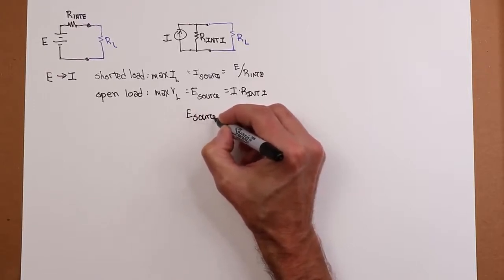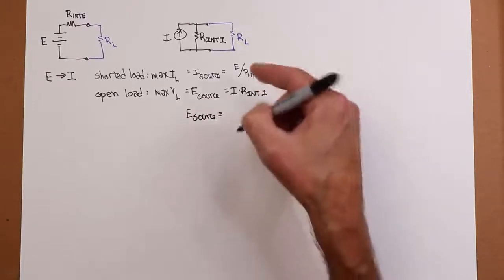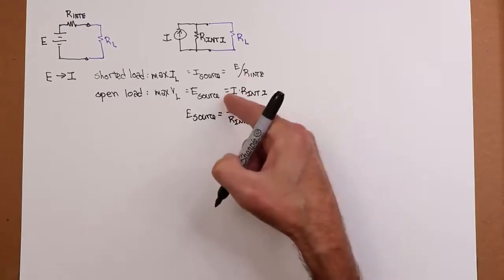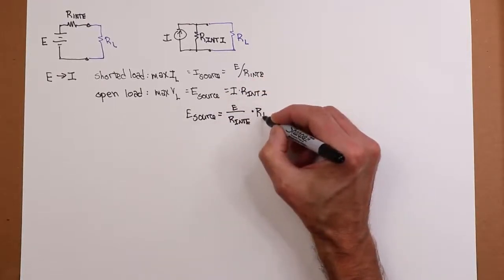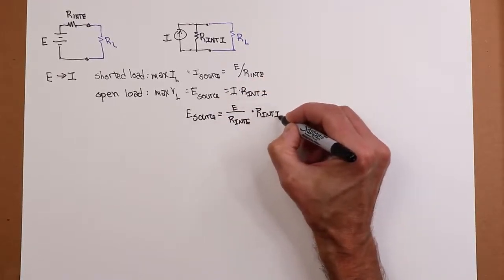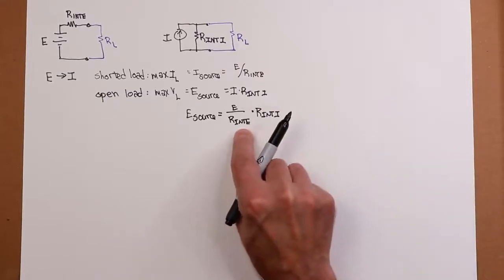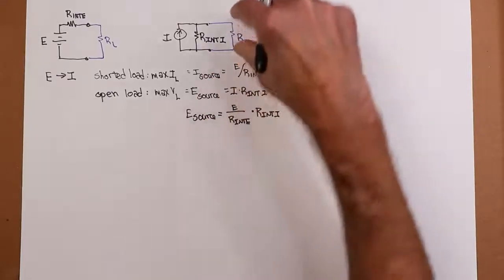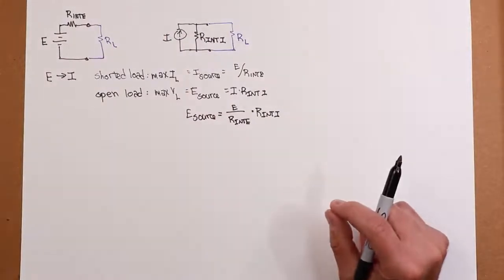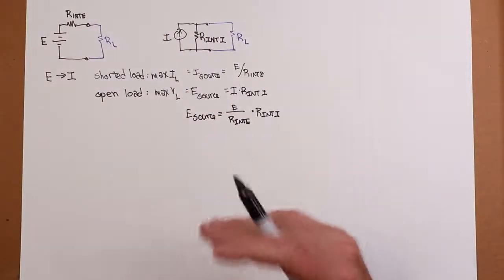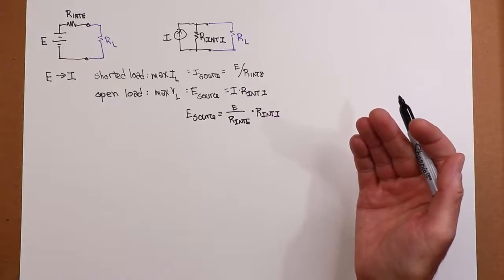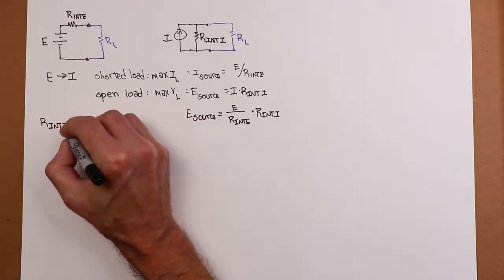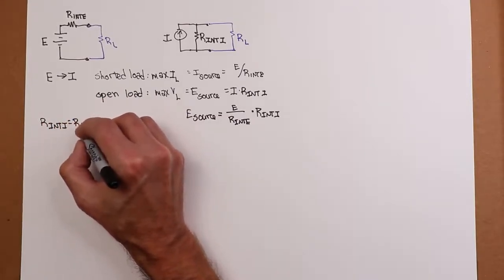Well, the only way that can occur is if the internal resistance for the voltage source and the current source are the same value. Then your load out here is the same as your source voltage. So now we have an idea. It turns out that R internal for the current source has to equal R internal for the voltage source. In other words, we just need to match the two resistors.